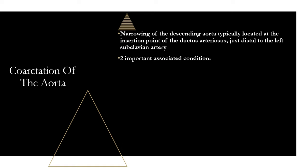Two important associated conditions to know for coarctation of the aorta: first is bicuspid aortic valve, seen in about 70% of adults with coarctation. Remember that the aortic valve normally has three leaflets, so a bicuspid valve only has two. If you see a patient with a bicuspid aortic valve, think about whether they also have coarctation. Second is Turner syndrome — about 15% of patients with Turner syndrome will also have coarctation of the aorta.